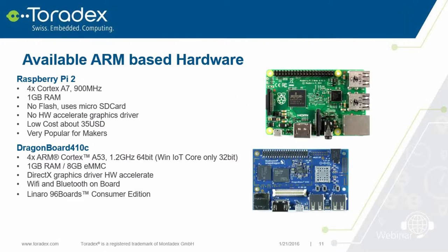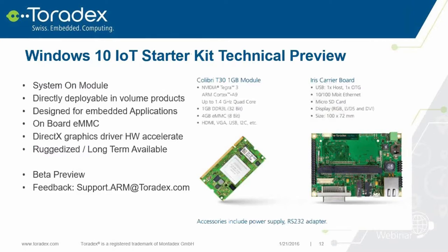Currently available SoCs include the Raspberry Pi 2 (the ~$35 one, not the $5 version) and the DragonBoard, which uses a Qualcomm chip that's actually 64-bit, though Windows IoT Core for ARM is currently a 32-bit version. These are mainly maker boards — fun for hobbyists. What Toradex provides now — if everything works well, available on our website around February 28th — is Windows 10 IoT as a technical preview on our Colibri T30.